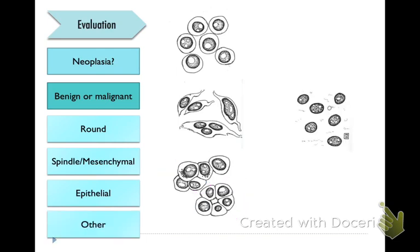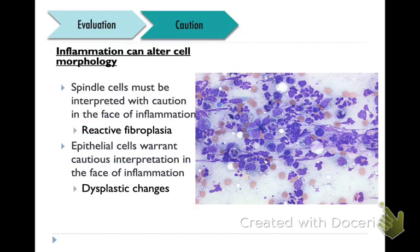We can also have other categories of neoplasms, such as endocrine or neuroendocrine, which look like bare nuclei swimming in a sea of cytoplasm where you don't see distinct cell borders. Always take into account whether or not you have inflammation present in your slide because inflammation can alter the morphology of the cells. Spindle cells have to be interpreted with lots of caution in the face of inflammation because they could just be reactive non-neoplastic fibroplastic spindle cells. Epithelial cells also warrant cautious interpretation in the face of inflammation because they can display dysplastic changes — changes that are not malignant but which can seem atypical.